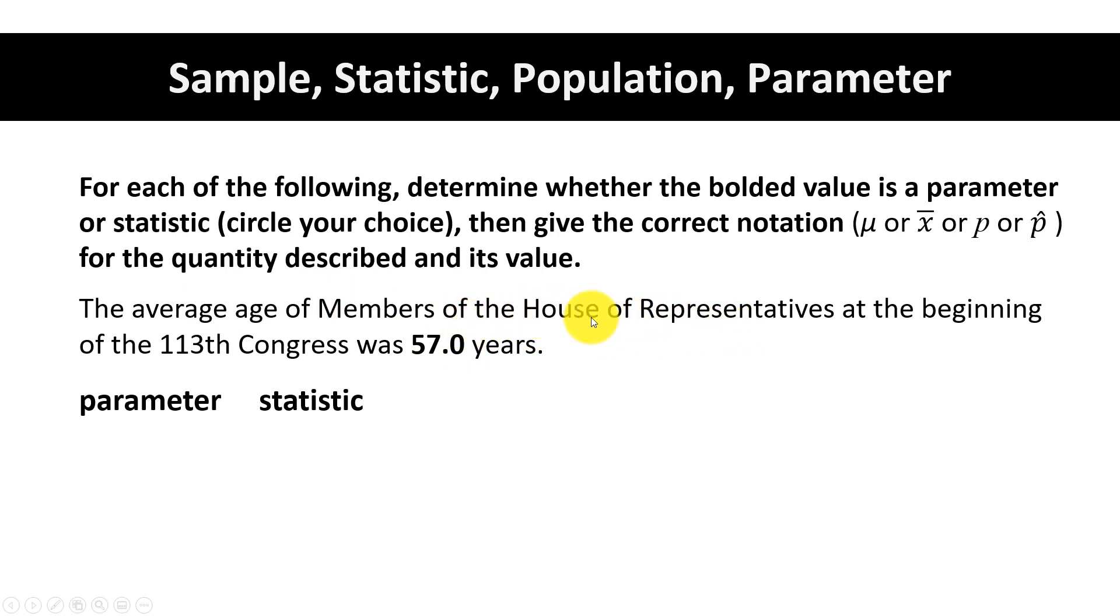Because it is an average, it is a mean. Again, we use μ (mu), so μ would equal 57.0 years. Now in future videos when we start doing inference, it's going to be important that we are able to pick out what numbers are parameters and what numbers are statistics.